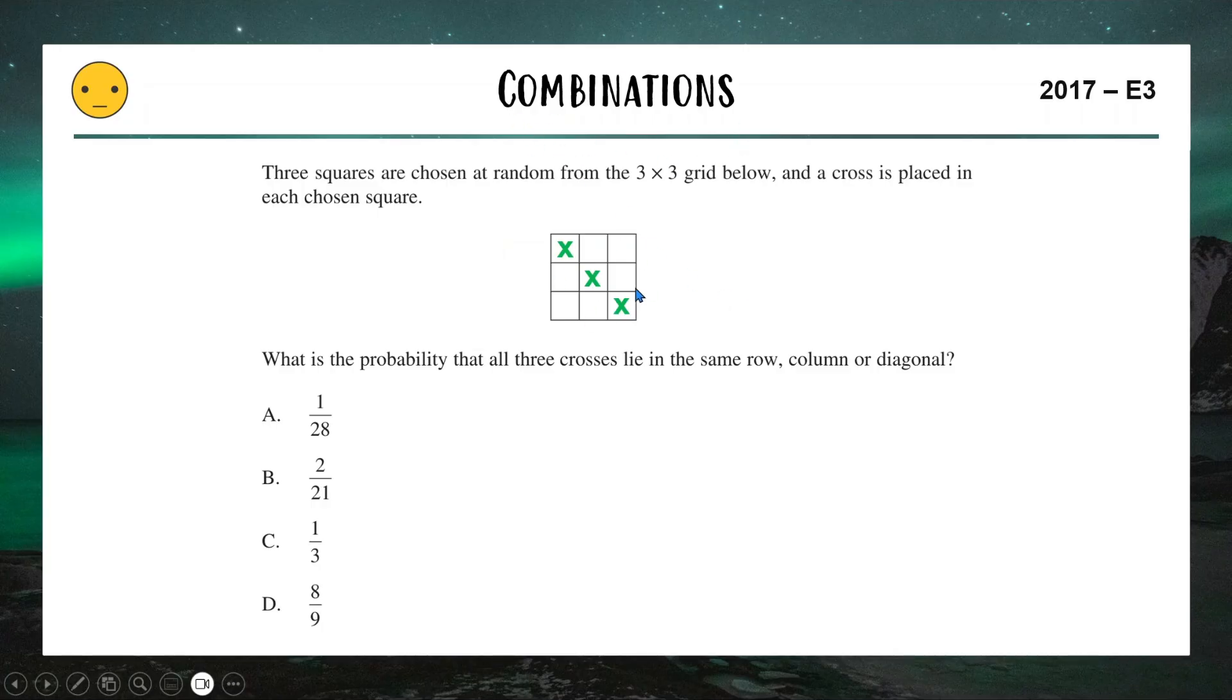So if I was just picking three at random, that would be me choosing three options out of nine options, and the order isn't important, so that tells me this is a combination of three from nine options. So choosing three squares is a combination of three from nine, which is 9c3, which we can calculate to be 84. So in total, there's 84 possible ways I could place three crosses in this three by three grid.